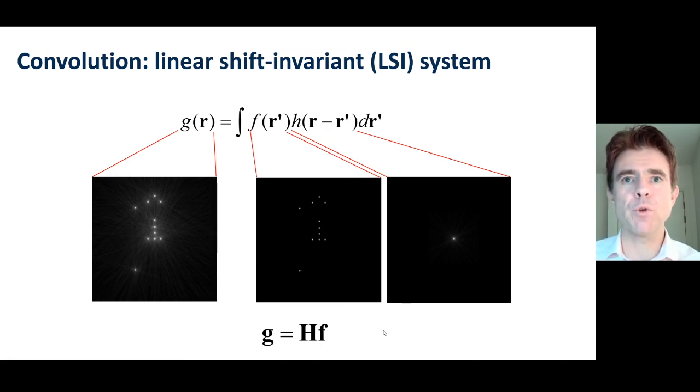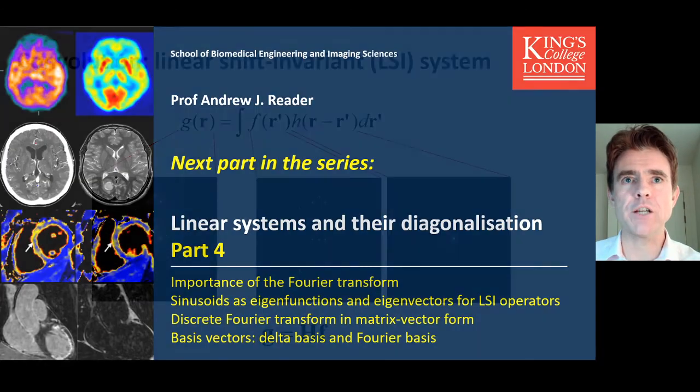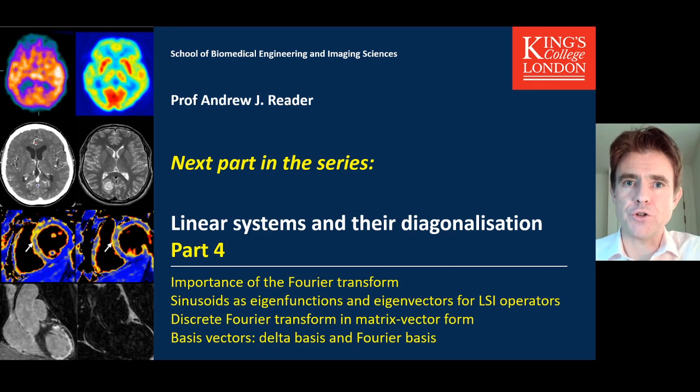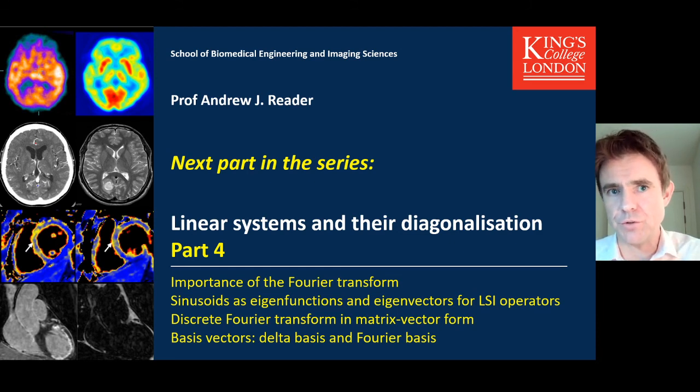That's all I wanted to cover in this part of the lecture. The next part is part four, where we're going to be looking into the importance of the Fourier transform and understanding sinusoidal functions as eigenfunctions or eigenvectors for linear shift-invariant operators. Then we'll look into the discrete Fourier transform in matrix-vector form and consider basis vectors, delta basis, and the Fourier basis. Thanks for listening to this part of the lecture.